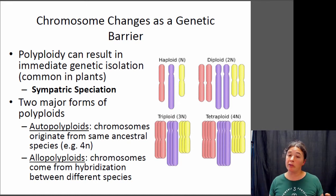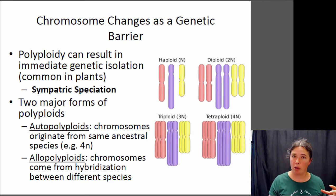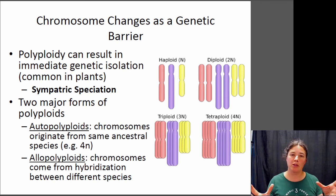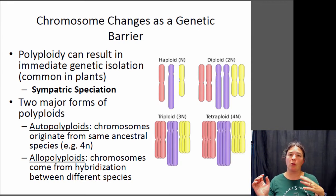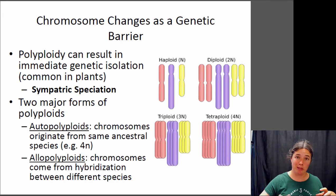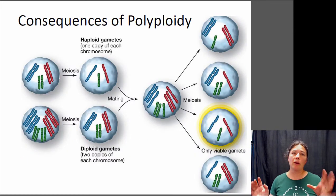When gametes are being made, a diploid individual is supposed to produce haploid sperm and eggs. But sometimes mistakes are made, producing a diploid egg. If that diploid egg meets a diploid sperm, you can end up with a tetraploid individual — an auto-polyploid with double the normal chromosomes. There are also allo-polyploids, which can arise when a diploid egg from one species is fertilized by a diploid sperm from a different species. This doesn't happen much in animals, but it does happen in plants.